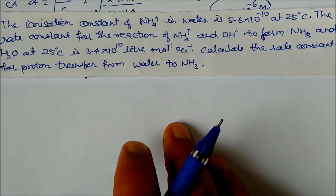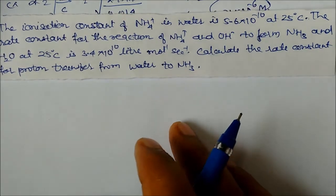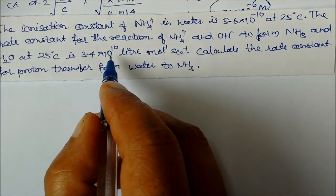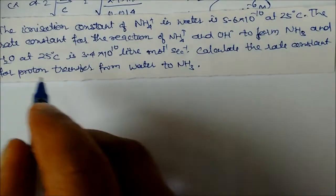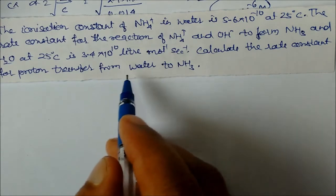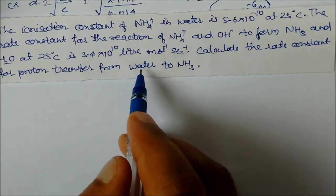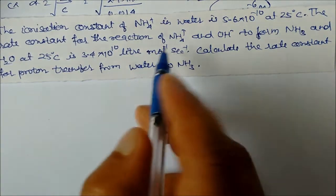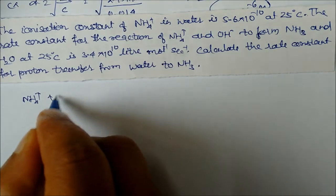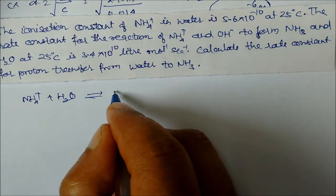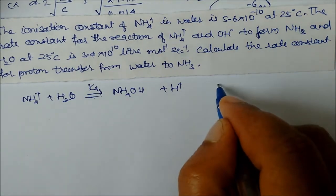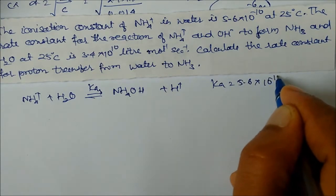Next problem: the ionization constant of ammonium in water is Ka = 5.6×10⁻¹⁰ at 25°C. The rate constant for the reaction of ammonium hydroxide forming ammonia and water is Kb = 3.4×10¹⁰ L mol⁻¹ s⁻¹. Calculate the rate constant for proton transfer from water to ammonia. NH₄⁺ in water gives NH₄OH and H⁺, where Ka = 5.6×10⁻¹⁰.